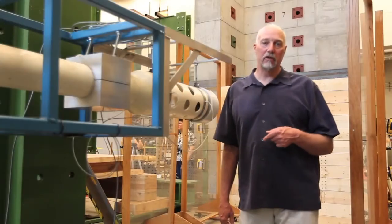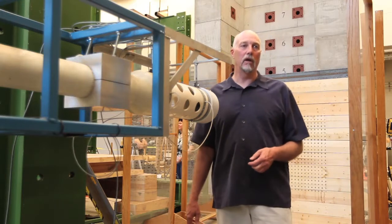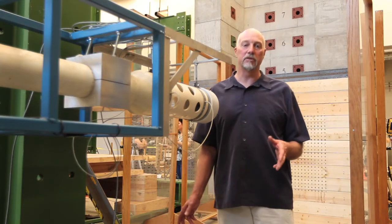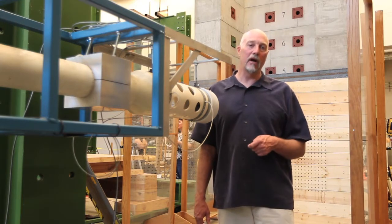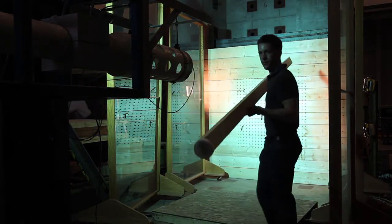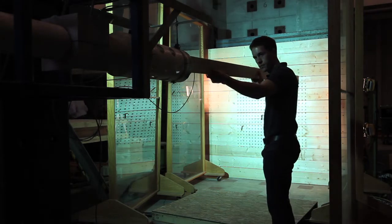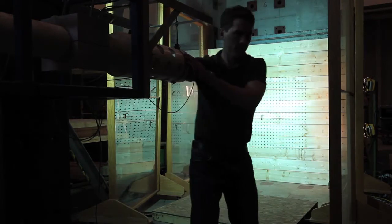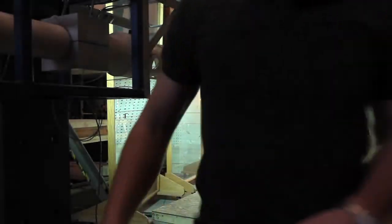The test itself is a standard test for safe rooms, and it involves shooting a 2x4 at 100 miles an hour, which simulates a 2x4 flying in a 250 mile an hour wind. We'll shoot that at the wall, and if it pierces the wall, it's a test failure, or if it creates too much debris.